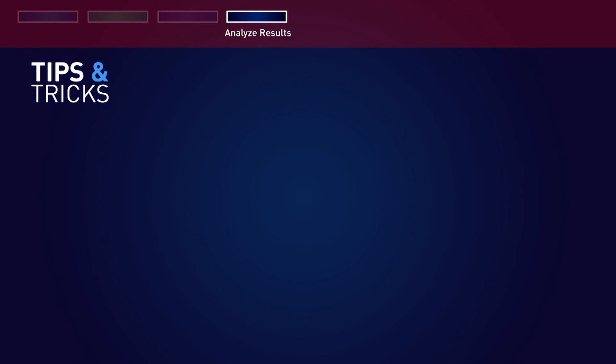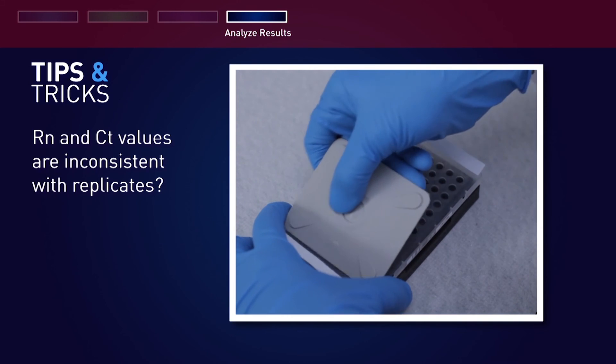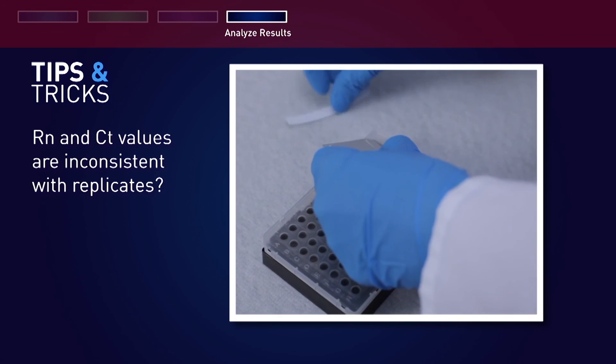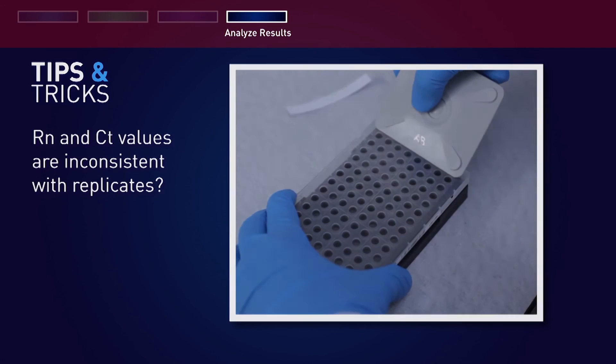If you find that the Rn and Ct values are inconsistent with replicates, it may be there has been evaporation of reaction mixture from some of the wells because the optical adhesive cover was not correctly sealed to the reaction plate.